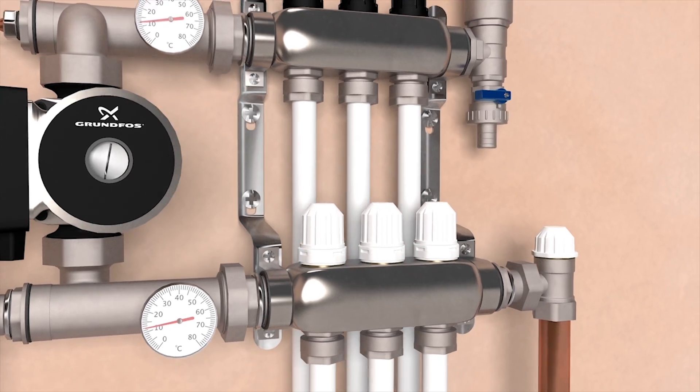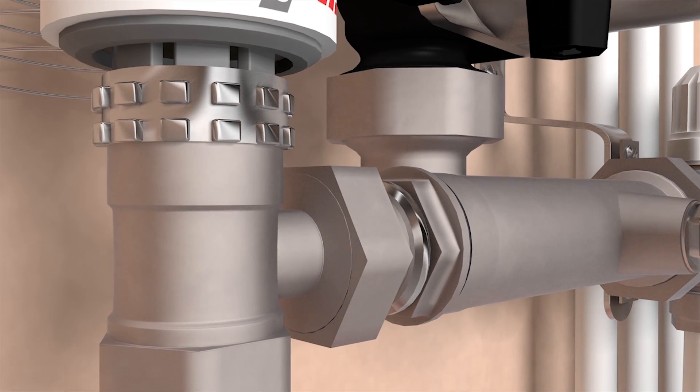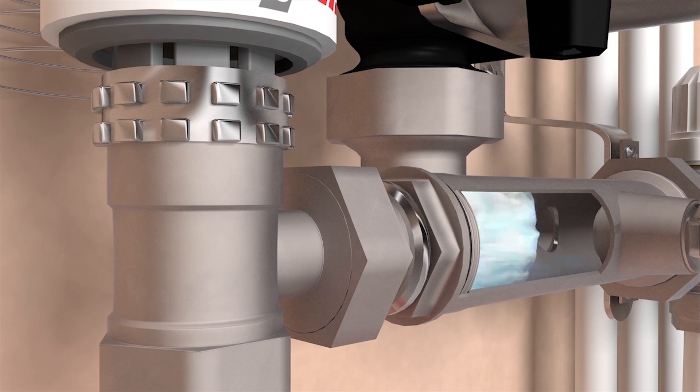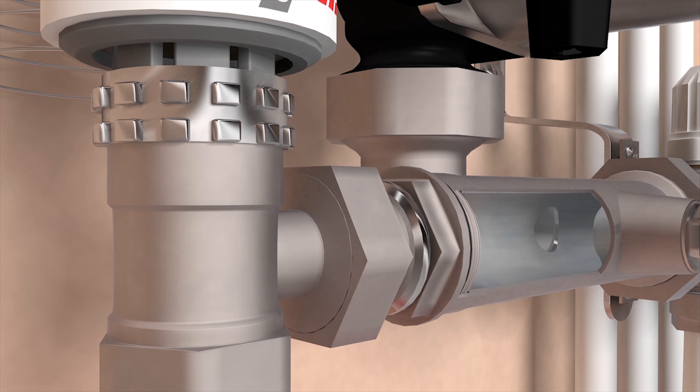Let's take a closer look at how the manifold works. When the warm water reaches the manifold it passes through the thermostatic blend valve. This blending valve mixes the warm water supplied from your heat source with the ambient temperature water already inside the manifold.